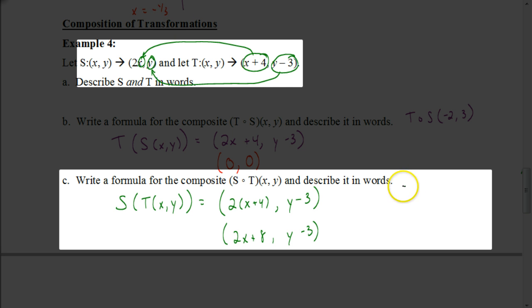Now just like before, if I was trying to find this value for this new coordinate after applying this composition for (-2, 3), I would just plug it into this formula. So 2 times -2 would be -4, and -4 plus 8 would be 4. And 3 minus 3 would be 0. So we can see that, again, that the composition of transformations are also not commutative because I didn't get the same answer here when I switched the order around.